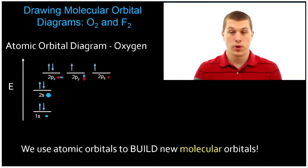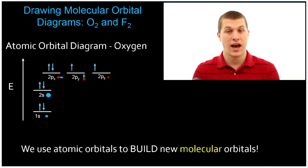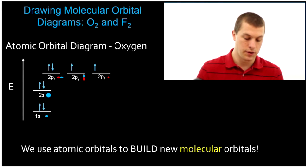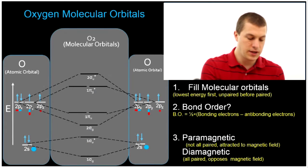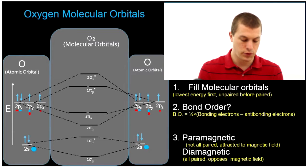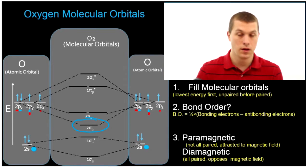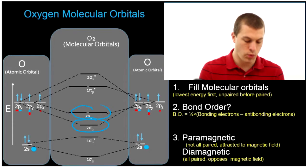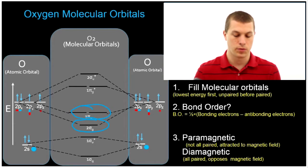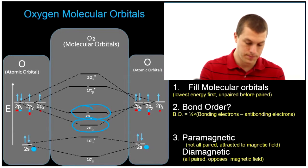Oxygen and fluorine are a little bit different from the diatomic elements that come lower than them on the periodic table. That's because for oxygen and fluorine, our 2 sigma molecular orbital is lower in energy than our 1 pi molecular orbital, and that's different than nitrogen, boron, and carbon.